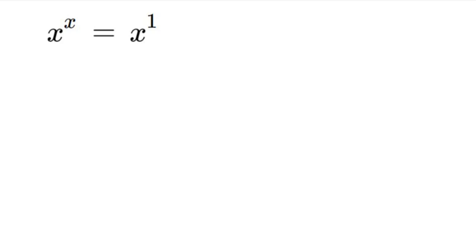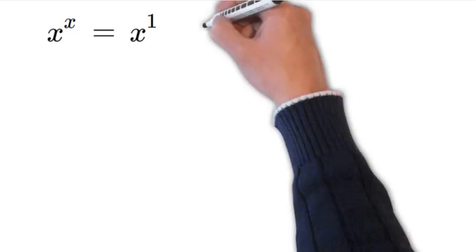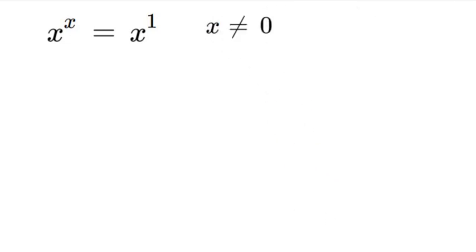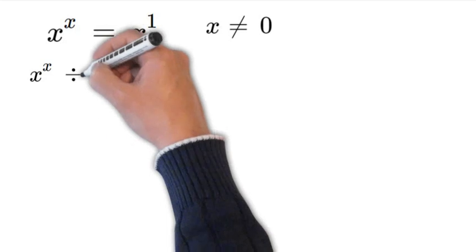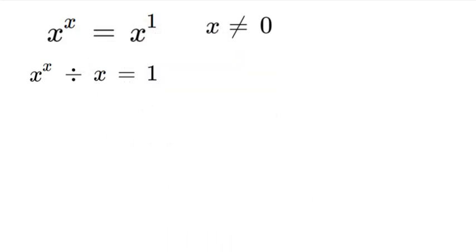So let's go ahead and rewrite this expression. If we divide the x from the right side, which is technically 1 times x, that'll leave us with 1, and then we'll have x to the power of x divided by x is equal to 1. Now we know that x technically has a power of 1, so we're going to use exponent properties to break this down further.